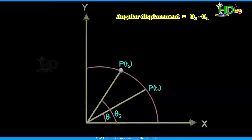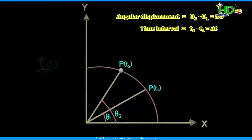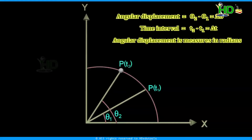The angular displacement is represented as delta theta and the time interval as delta t, that is t2 minus t1. Here delta theta and delta t represent extremely small changes in theta and t respectively. Angular displacement is measured in units of radians.